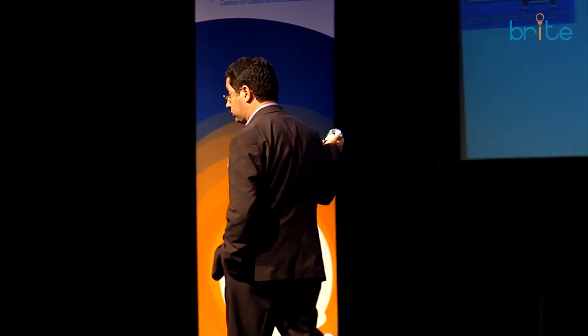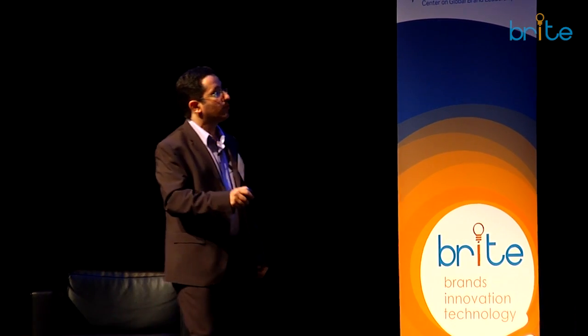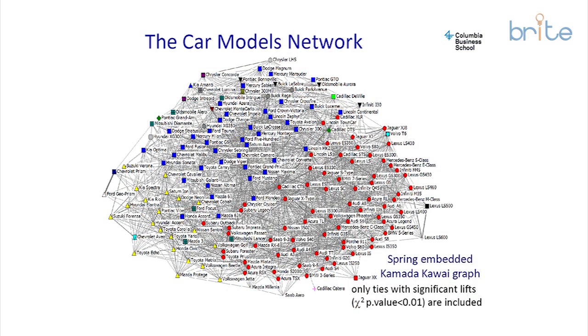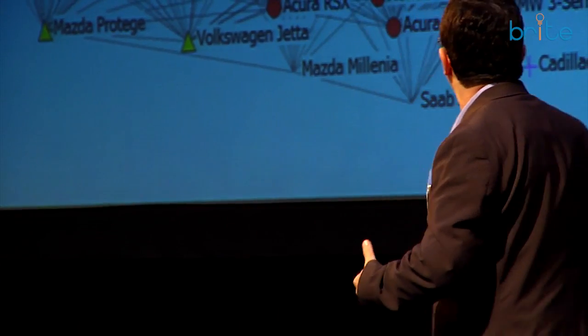We downloaded the entire Edmunds.com forum and the first thing we looked for was how often every two cars appear together in a sentence across the 900,000 messages. You can think about that as a semantic network. We can draw it using network analysis techniques, and here's the map. We had 169 different car brands we could analyze simultaneously — try writing a survey asking consumers about 169 different brands. The network analysis technique allows us to depict it in a visible way.